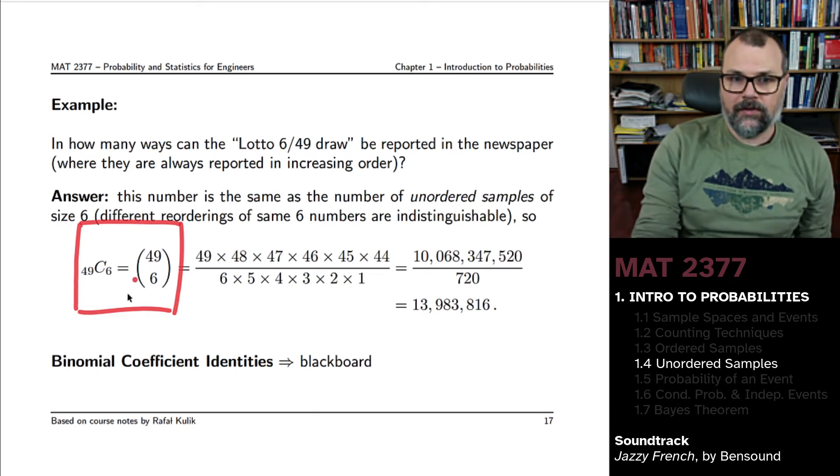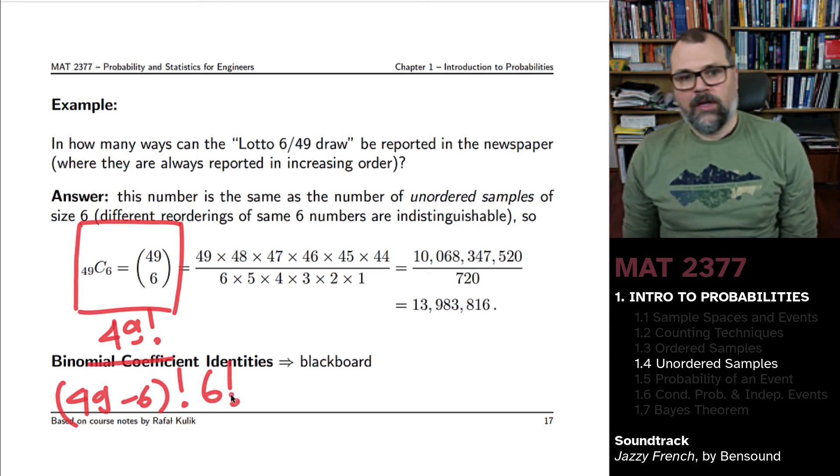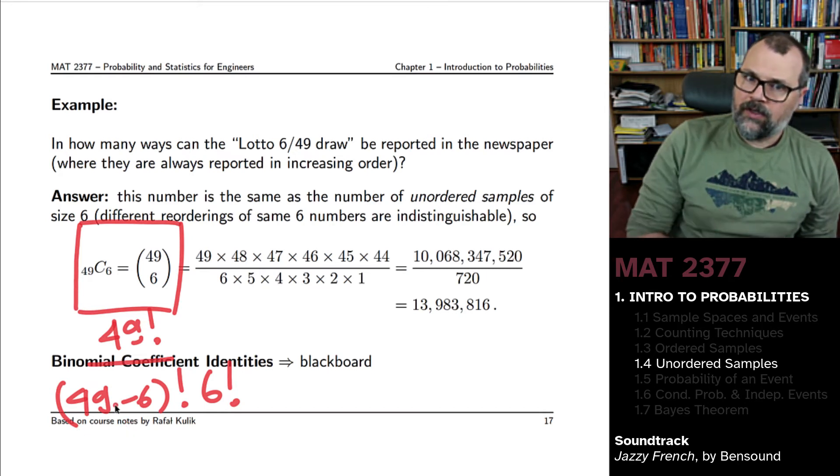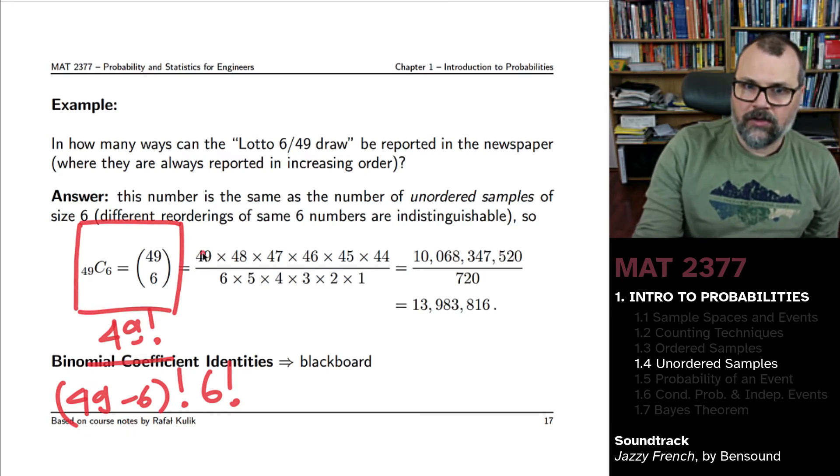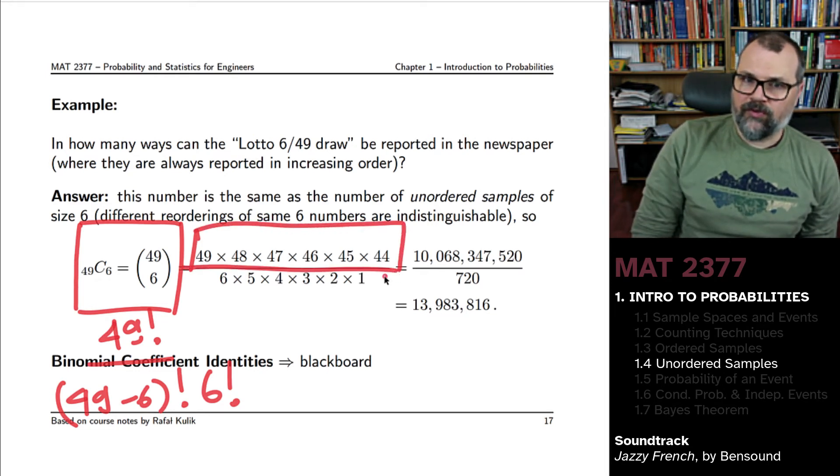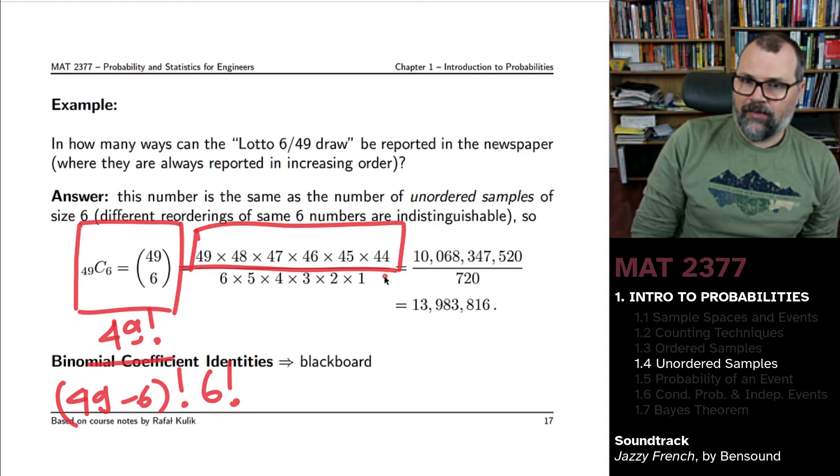But you can see that this would be 49 factorial divided by 49 minus 6 factorial. We know how to compute 49 factorial divided by 49 minus 6 factorial. We've done this before. It's just the product of the integers between 49 and 44. And you divide that by 6 factorial.